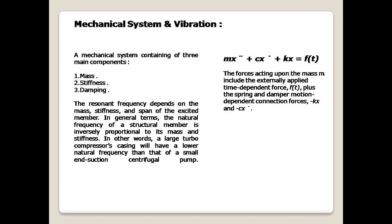A mechanical system contains three main components: mass, stiffness, and damping. The resonant frequency depends on the mass, stiffness, and span of the excited member. In general terms, the natural frequency of a structural member is inversely proportional to its mass and stiffness. In other words, a large turbo compressor's casing will have a lower natural frequency than that of a small centrifugal pump.